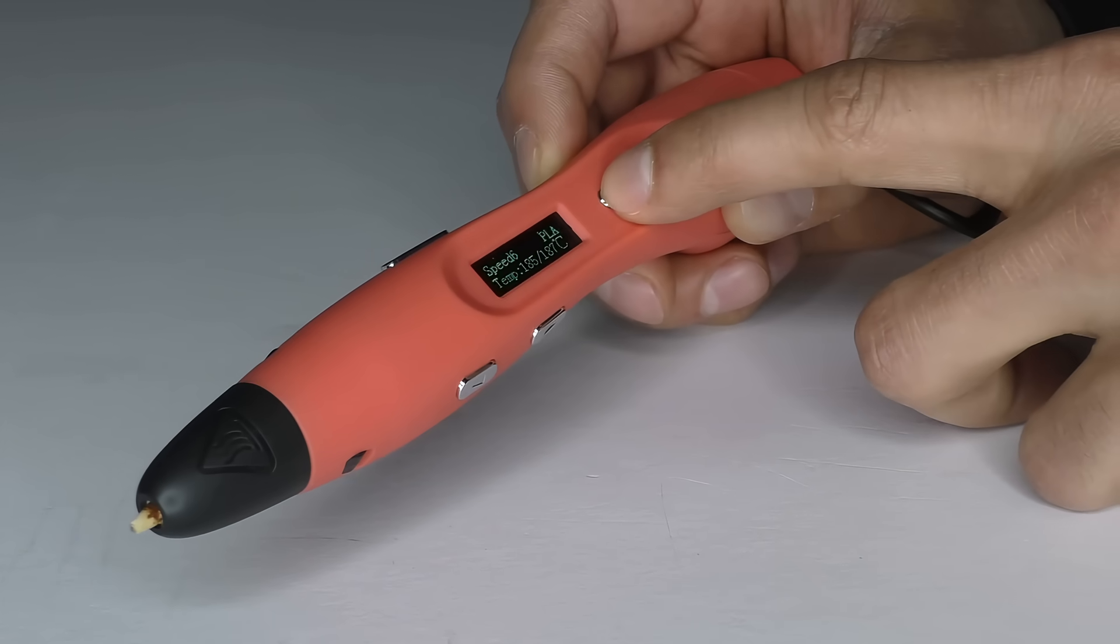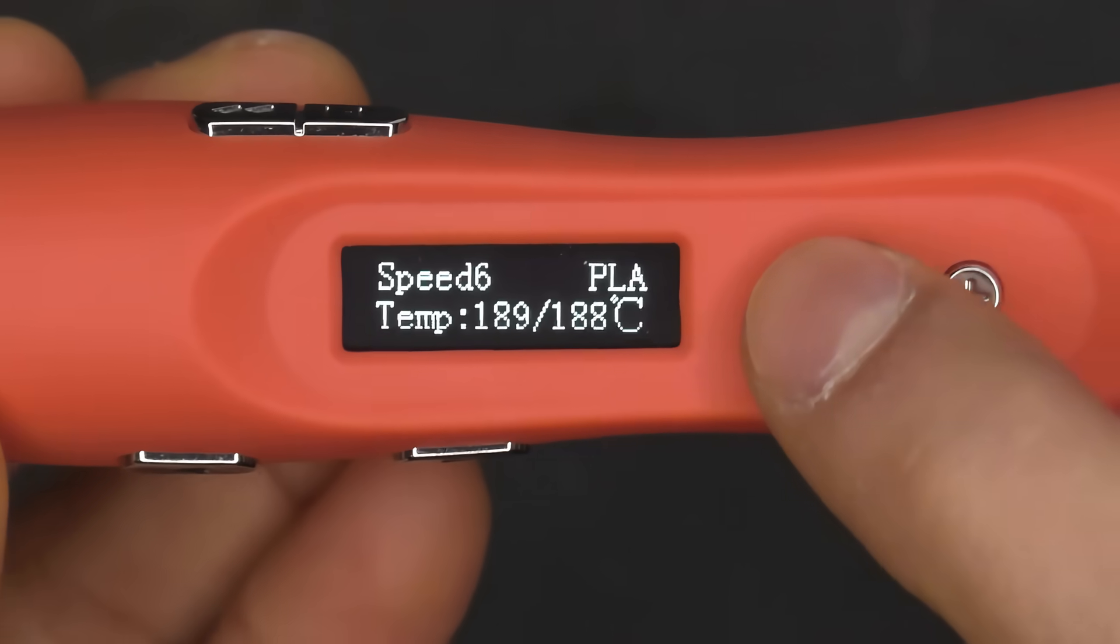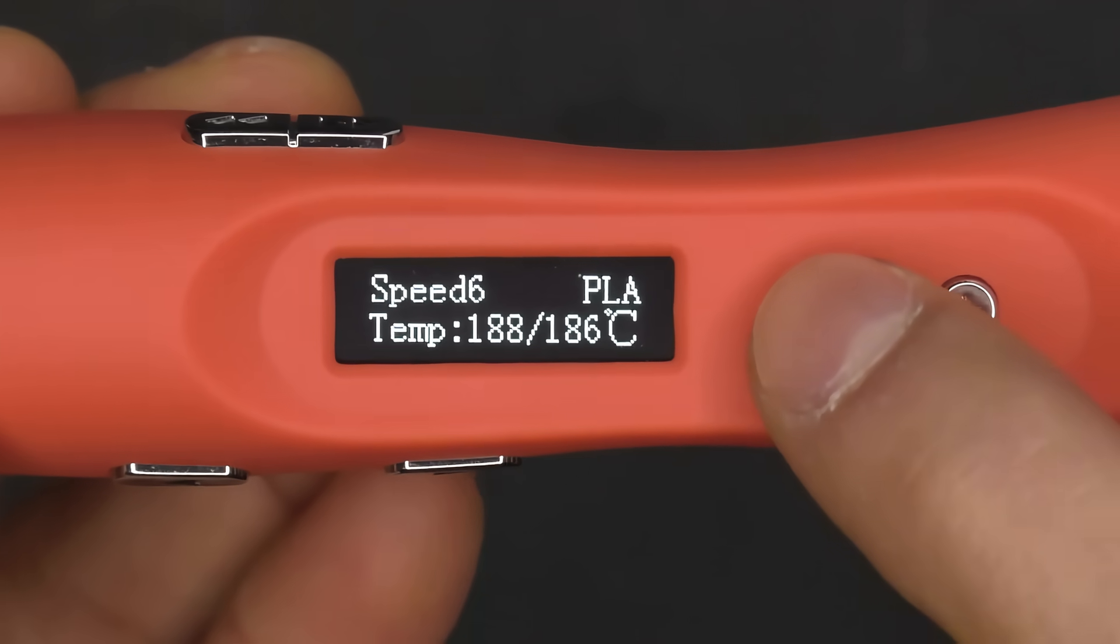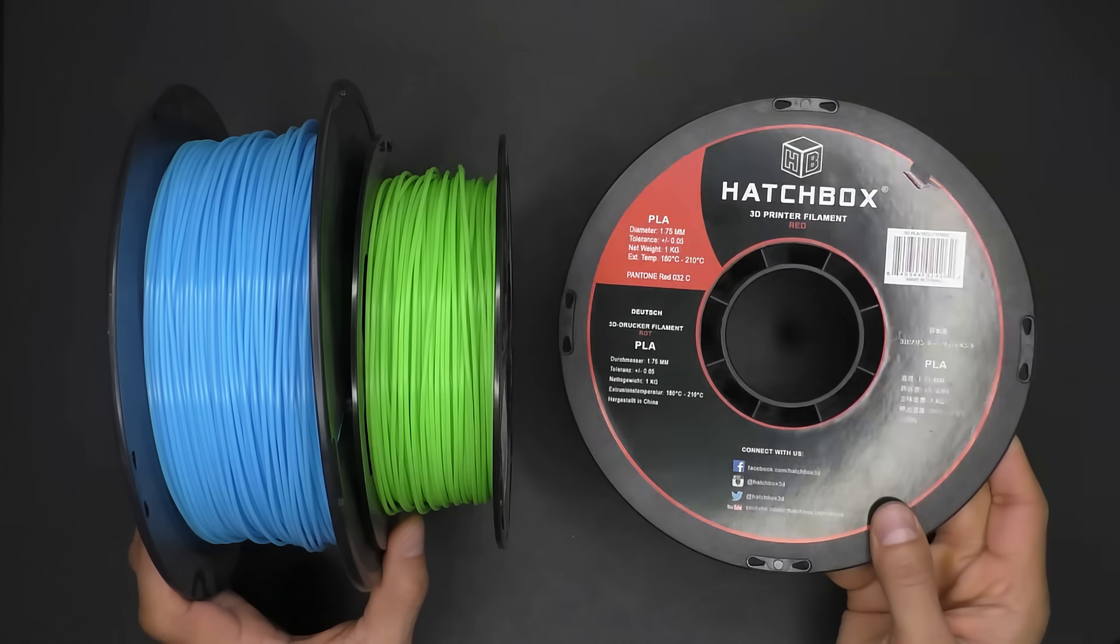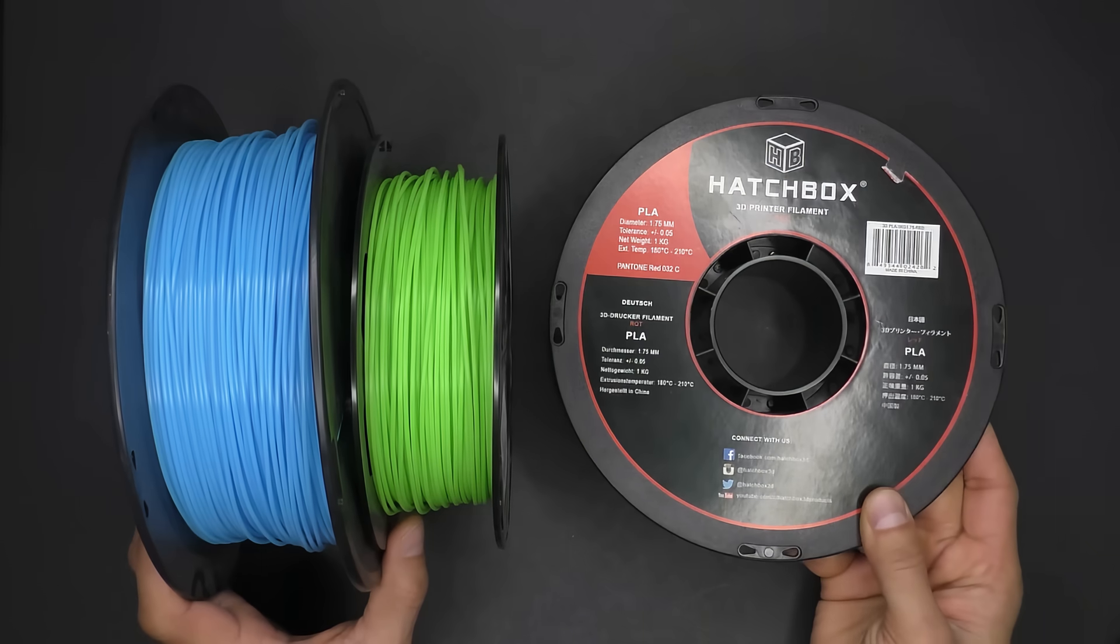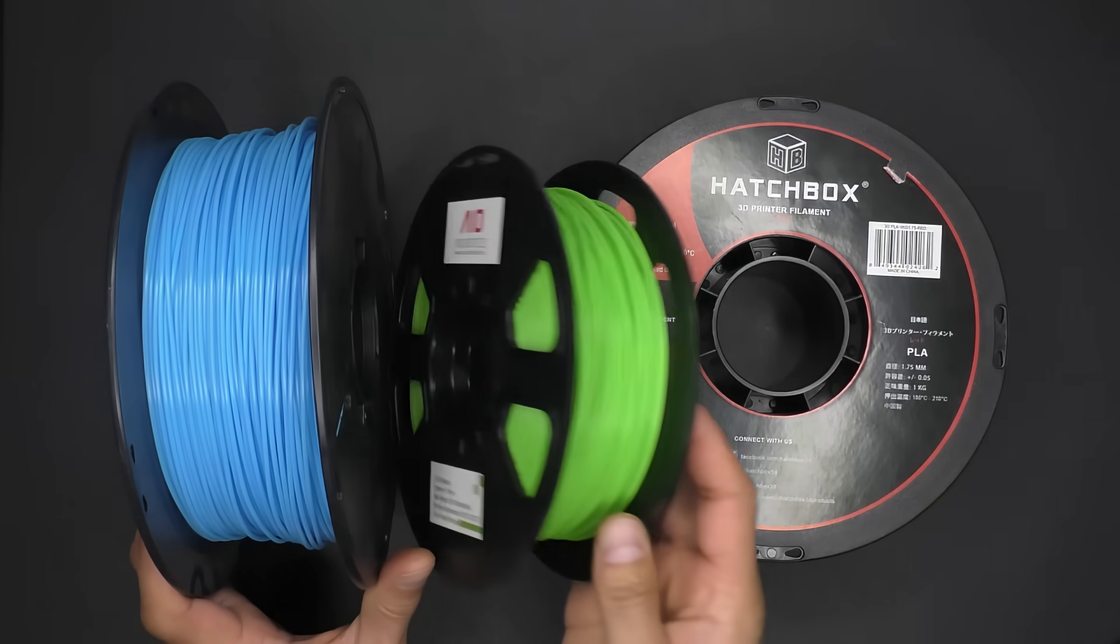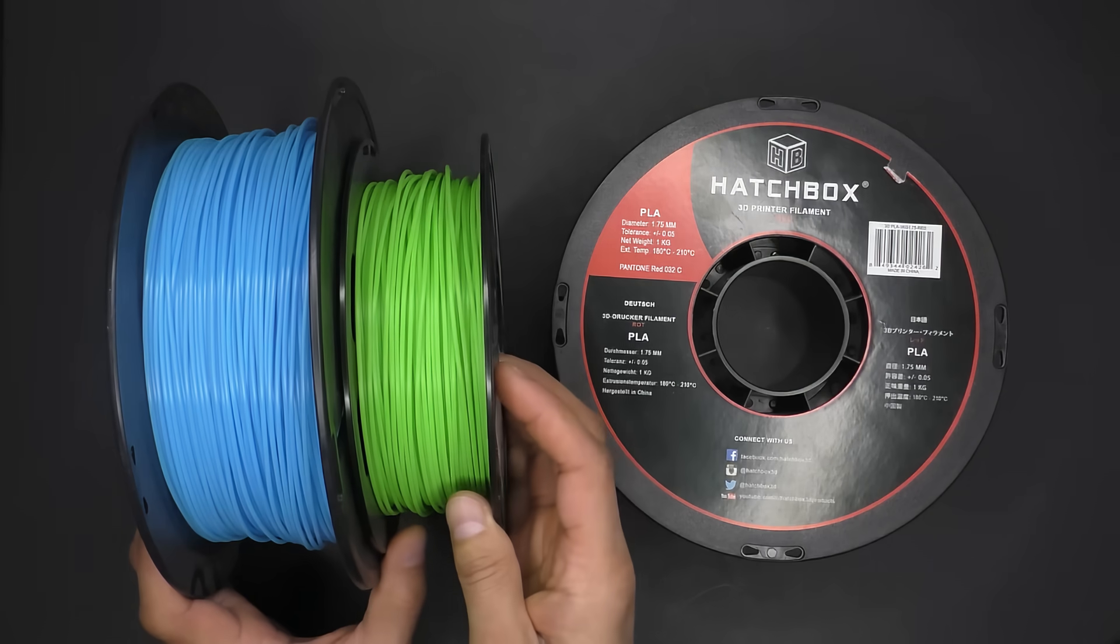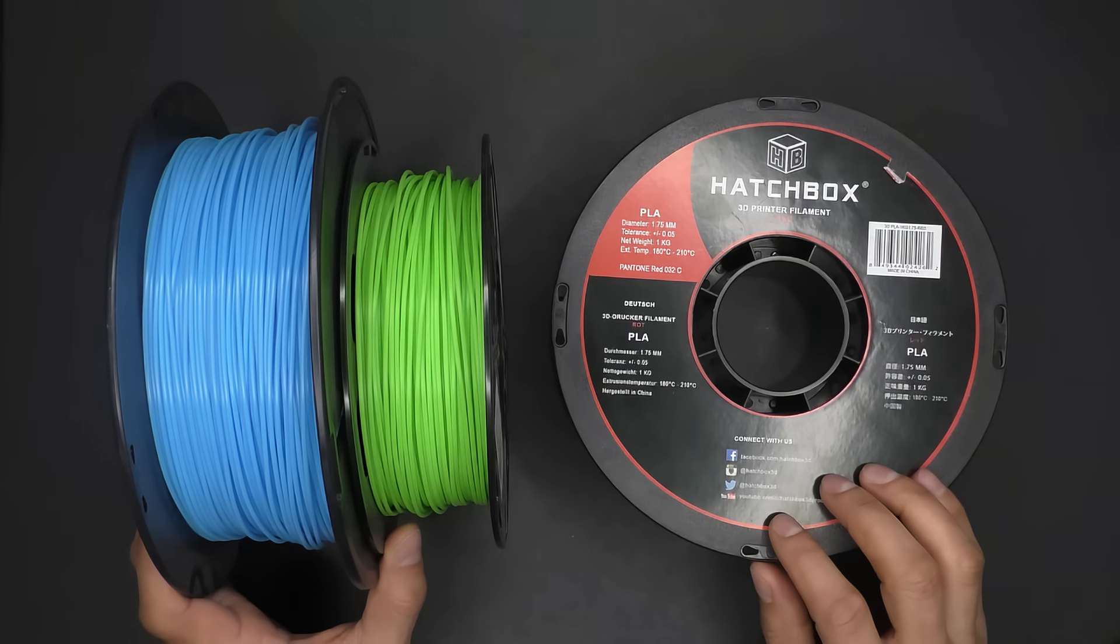Another tip for adhesion issues is that having the temperature too high can lead to the filament sticking more than it needs to. You can see how important it is to find the right temperature for a specific filament. And remember that each brand and type of filament is different. Not all PLA will use the exact same temperature. So don't be afraid to adjust up and down by a few degrees.